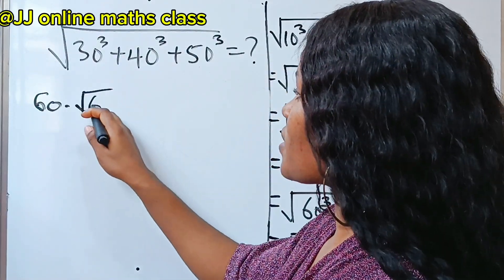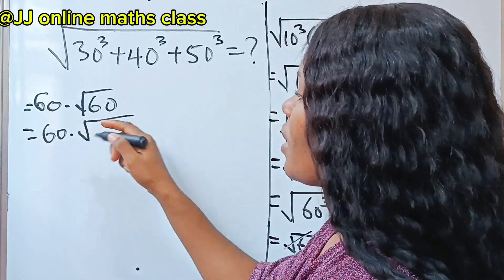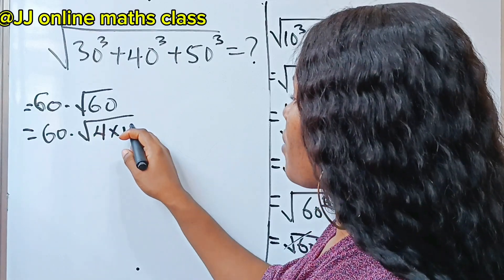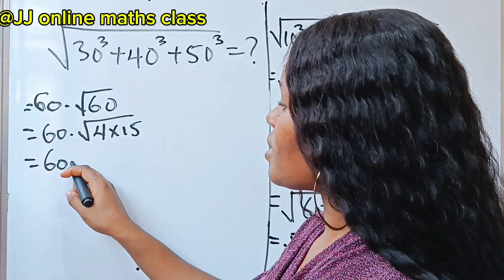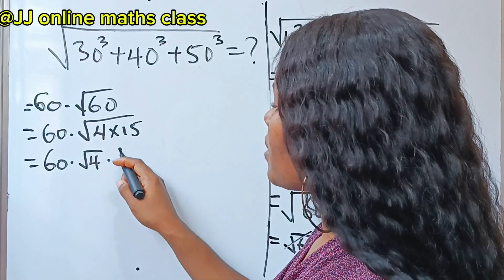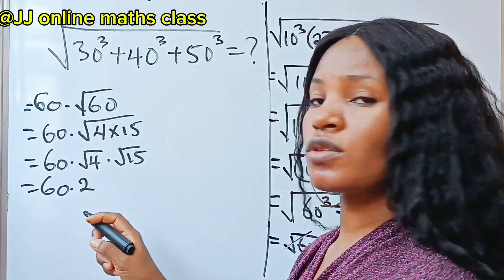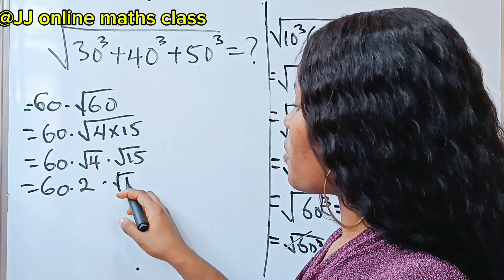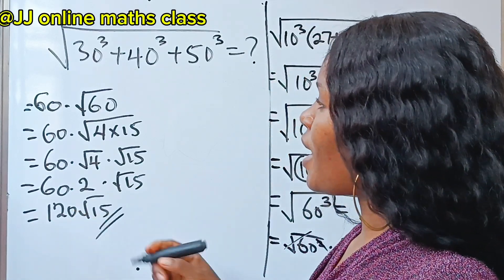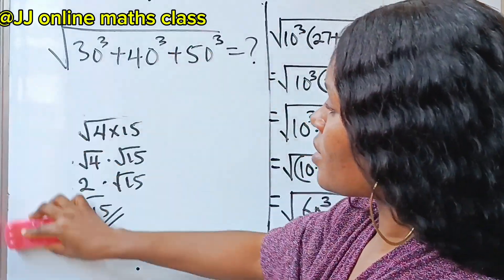So we have 60 multiplied by square root of 60. Now 60 is the same thing as 4 times 15, so this equals 60 multiplied by square root of 4, multiplied by square root of 15. Square root of 4 gives us 2, multiplied by root 15. So this is equal to 120 root 15. That is the answer for the first method.